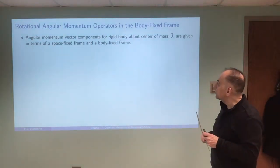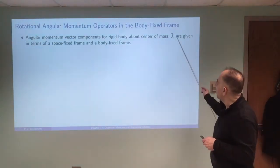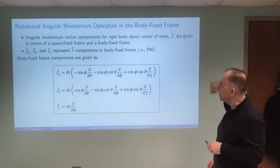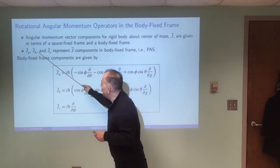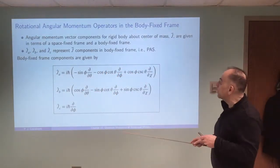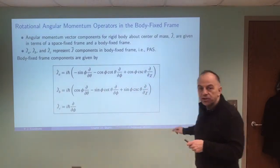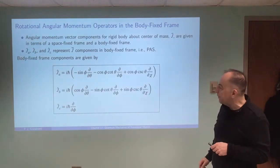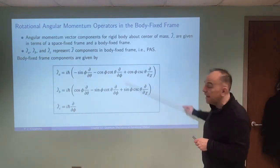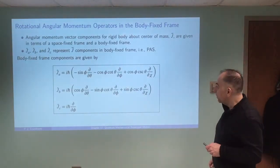We've talked about the space-fixed and body-fixed frames in Chapter 4, so we're going to have two sets of components for describing the one angular momentum vector. In the body-fixed frame, we're going to define J_A, J_B, and J_C, which are the angular momentum associated with the principal axes for the moment of inertia tensor. I'm just going to give you this result without derivation — these are what those operators look like for J_A, J_B, and J_C in terms of the Euler angles describing the orientation of our molecule as a rigid body.